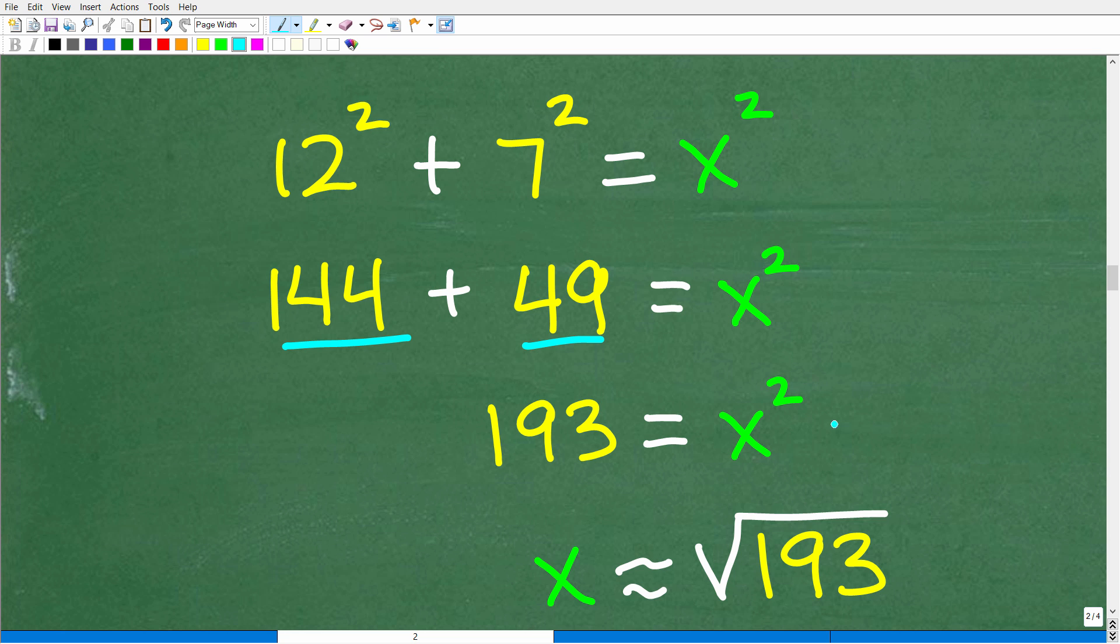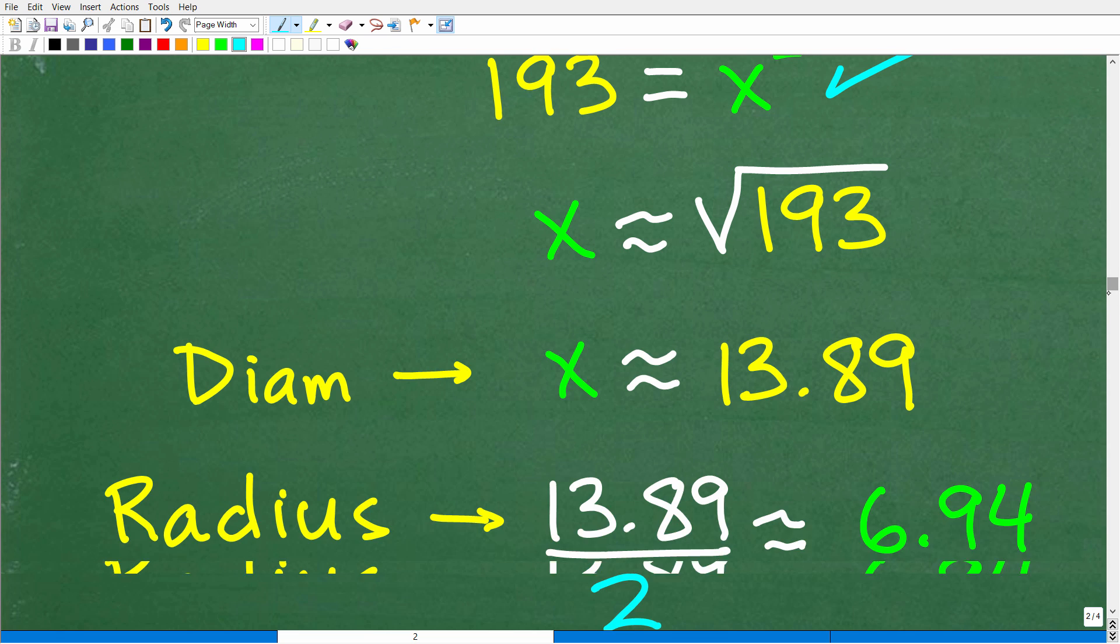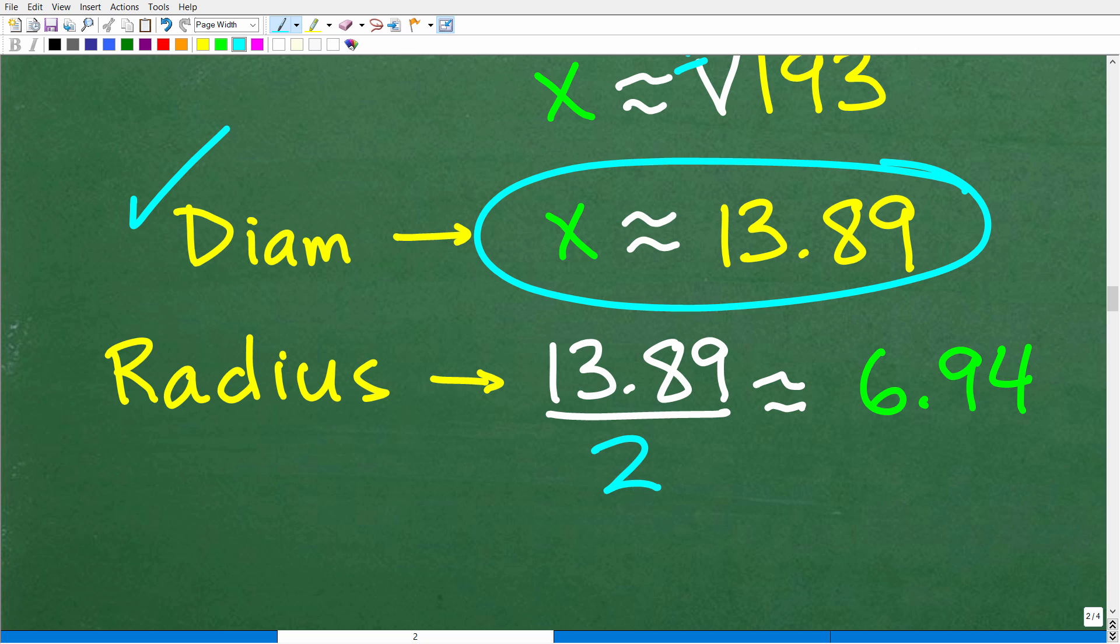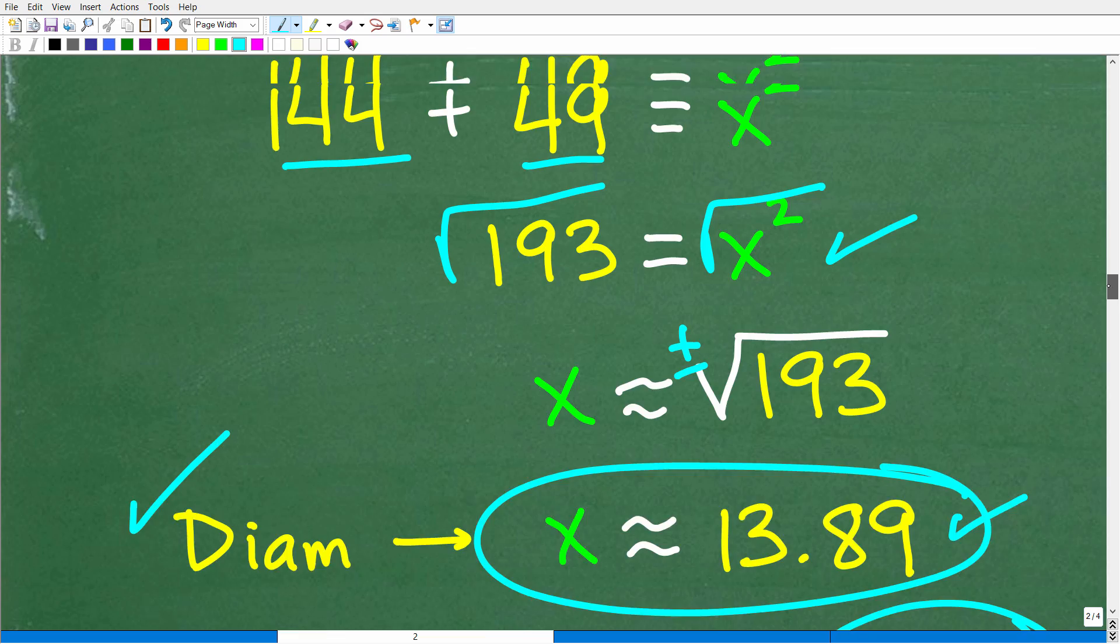So 12 squared is 144 plus 7 squared is 49 equals X squared. 144 plus 49 is 193 equals X squared. We have a quadratic equation. To solve for X, I take the square root of both sides. X will be approximately equal to positive and negative square root of 193. We never use the negative values because we're talking about positive distance. In our calculator, we take the square root of 193 and get approximately 13.89. Remember, that is the diameter. We want the radius, which is one half the diameter. So 13.89 divided by 2 gets us to about 6.94.